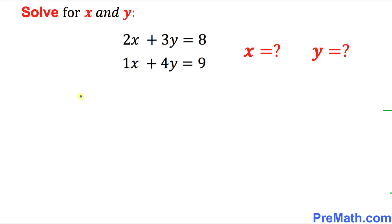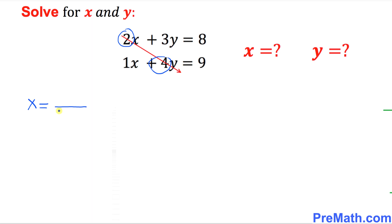Let's get started with finding the x value. We are going to set x equal to a fraction, and we'll start from the denominator part. Let's cross multiply from left to right: 2 times 4 gives us 8. Put down 8 at the denominator, then always put a minus sign, and multiply the other way around from right to left: 3 times 1 gives us 3.